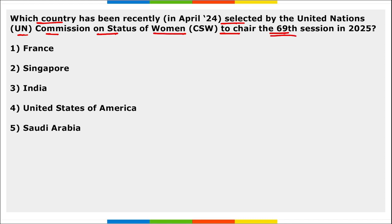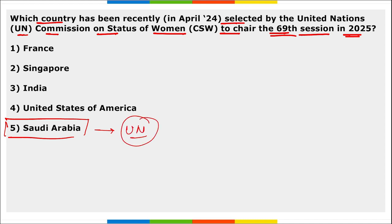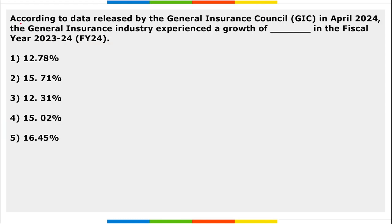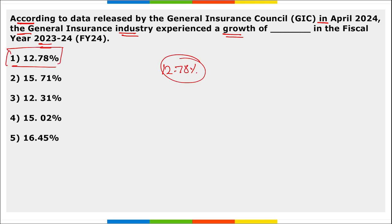Next: which country has been recently selected as the UN Commission on Status of Women to chair the 69th session in 2025? It is Saudi Arabia. Saudi Arabia has been selected to chair the 69th session in 2025. According to data released by the General Insurance Council in April 2024, the general insurance industry experienced a growth of 12.78 percent in financial year 24.